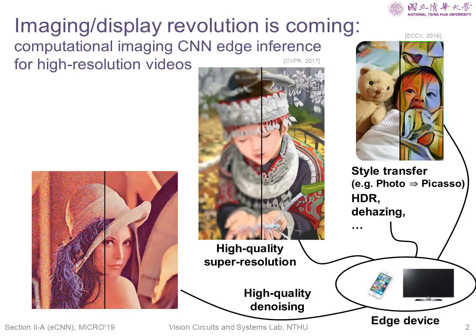CNNs have achieved great image quality for computational imaging applications, such as denoising, super-resolution, style transfer, and so on. What we need is just a powerful and efficient CNN processor to bring this to our cell phones and TVs.